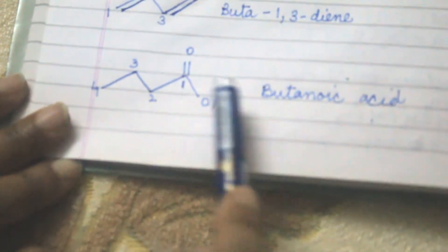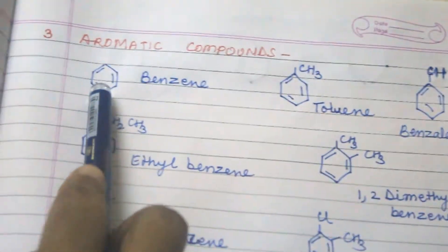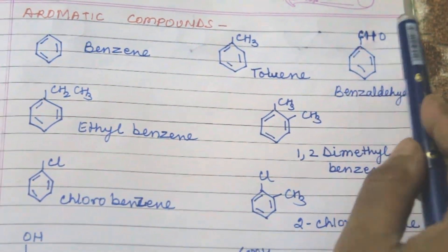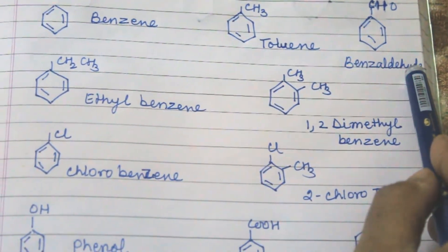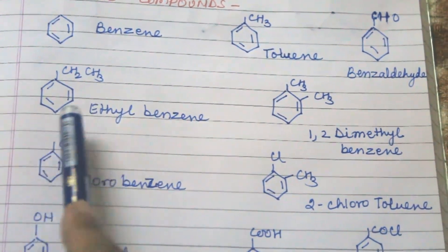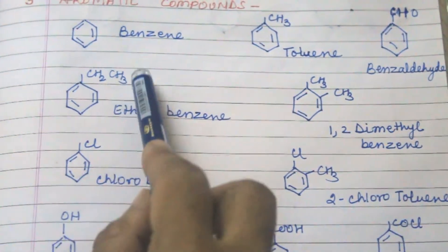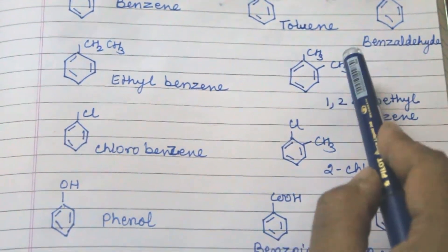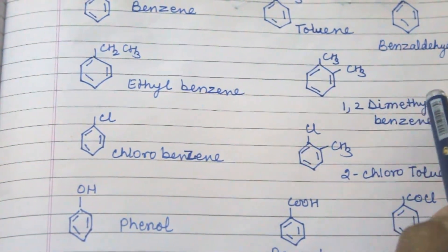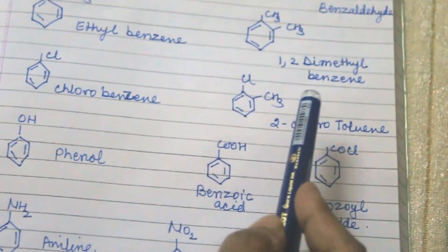Now we come to aromatic compounds. This is benzene. When CH3 is attached to benzene it is known as toluene. When CHO is attached it is benzaldehyde, because it is an aldehyde group. When CH2CH3 is attached it is ethylbenzene, because the ethyl group has two carbons. When two CH3 groups are attached at different positions it is 1,2-dimethylbenzene. When a chloro group is attached to benzene it is chlorobenzene.